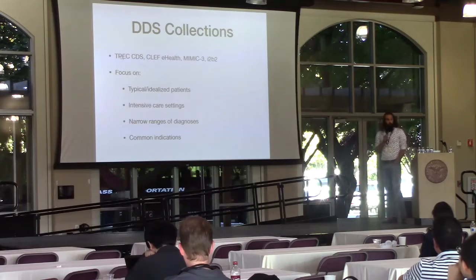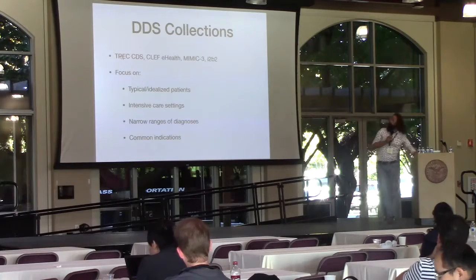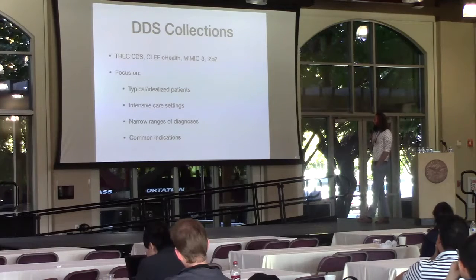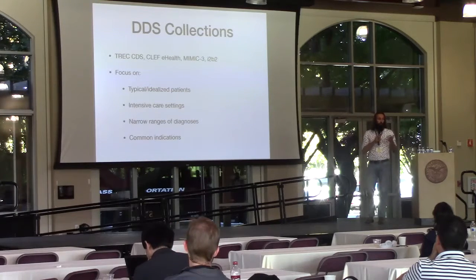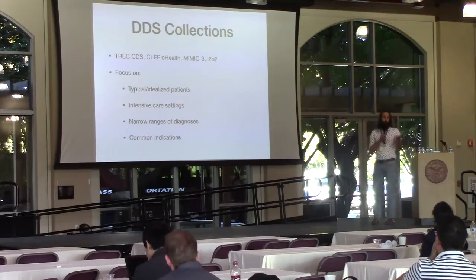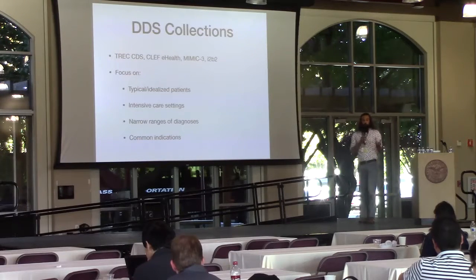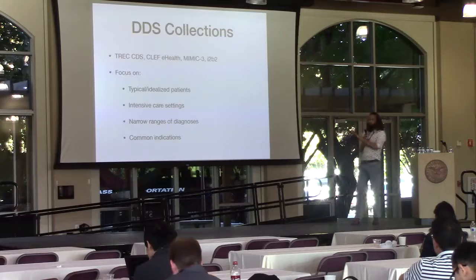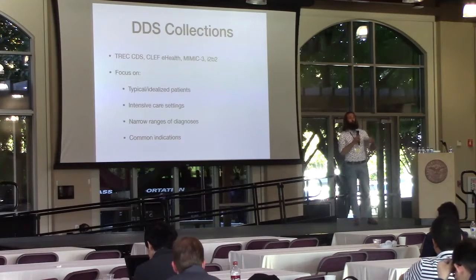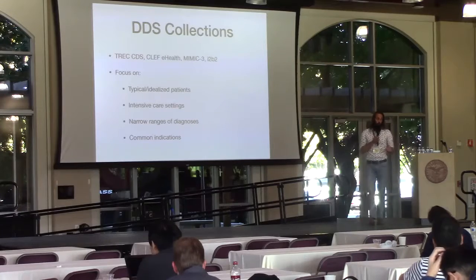There are a bunch of collections already being used to evaluate and train diagnostic decision support systems. So the question is: why do we need another one? If we look at these — the clinical decision support track from TREC, CLEF eHealth, MIMIC, I2B2, and others — they all give you patient-related information and want you to tie that to relevant documents. However, because actual patient data is very privacy-sensitive, many of these collections use made-up patients. Doctors describe what a typical congestive heart failure patient looks like and construct a synthetic patient record — so that's the synthetic dataset you're working with, which is not ideal.